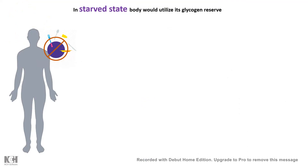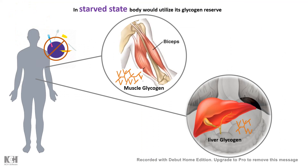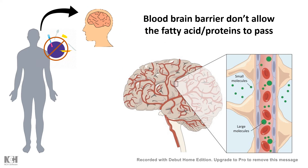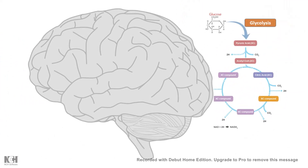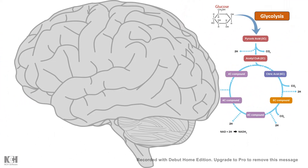In the starved state, this same glycogen would be broken down from muscle and liver, and that would be the primary source of energy, going again into the glycolytic pathway to form energy. In fact, our brain uses glucose as a primary source of energy because fatty acids and protein cannot pass the blood-brain barrier, whereas glucose can easily pass the blood-brain barrier — and ketone bodies can as well. That's why glucose enters the brain, undergoes glycolysis and the Krebs cycle all inside brain cells, and gives them energy.